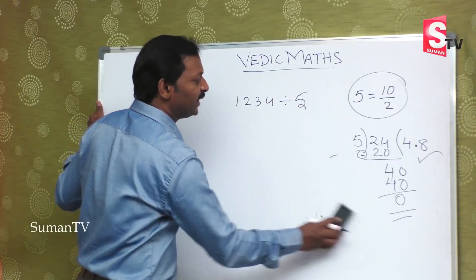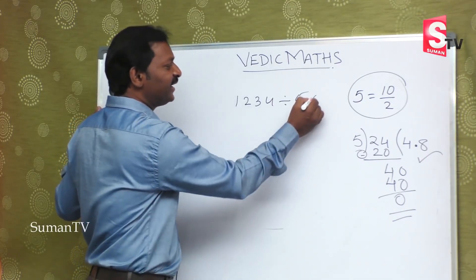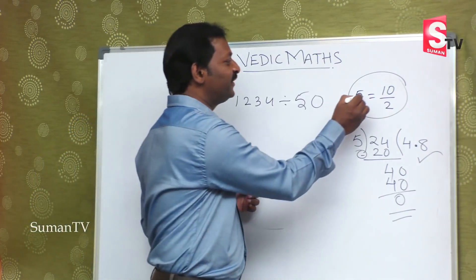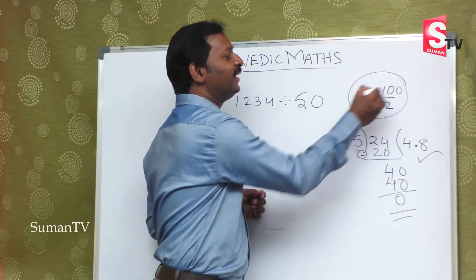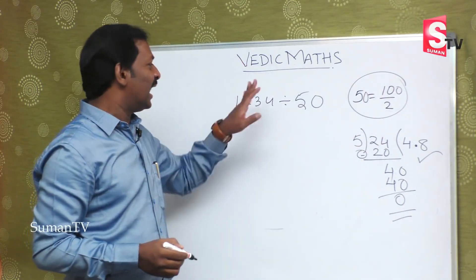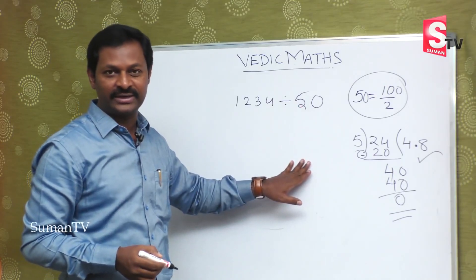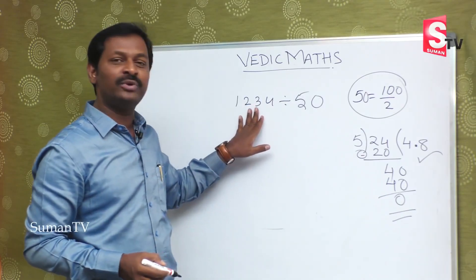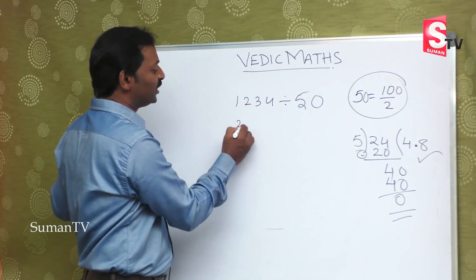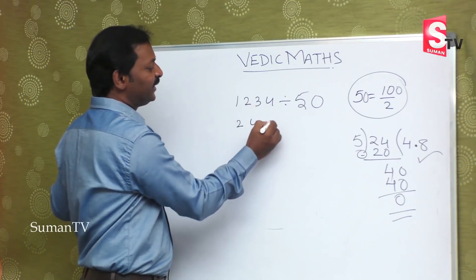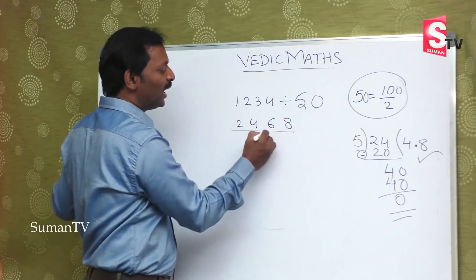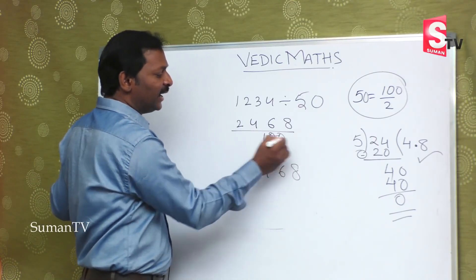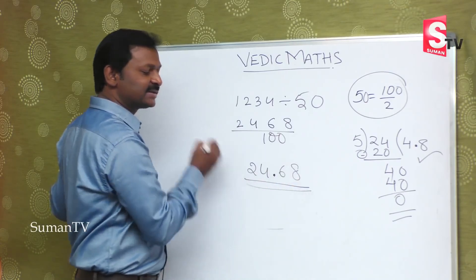If the number in your question is fifty instead of five, then five means ten by two — so fifty means hundred by two. Convert the division to multiplication: it becomes two by hundred. Multiply the number by two: one two-za two, two two-za four, three two-za six, four two-za eight — by hundred. So the final answer is two four six eight. Since it is hundred, remove two digits and place the decimal: the answer is twenty four point six eight.